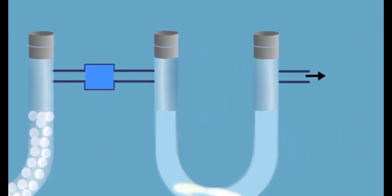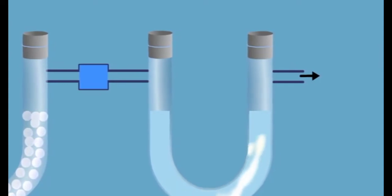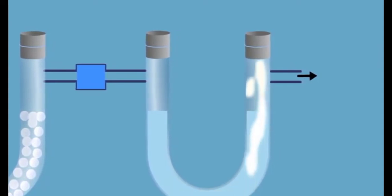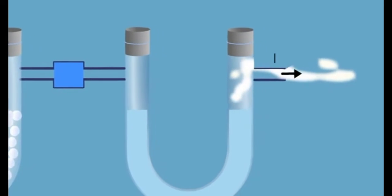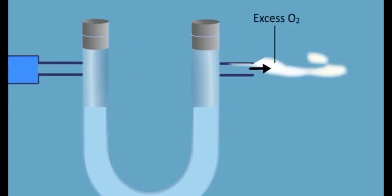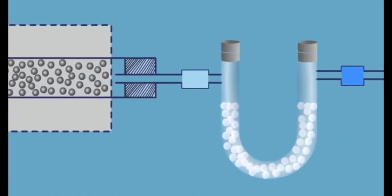The increase in masses after the experiment gives the amount of water and CO2 produced. Using these values, the amount of carbon and hydrogen are determined in an organic compound.